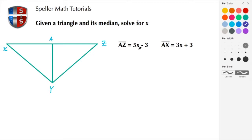We're given that the length of AZ is 5x minus 3. Let's go ahead and add that to the drawing. So AZ, right here we have 5x minus 3. On the right we have AX, and AX is 3x plus 3.